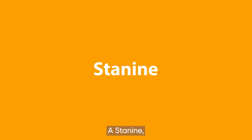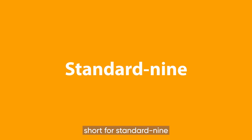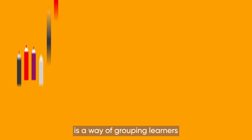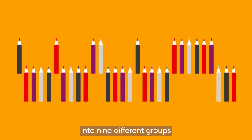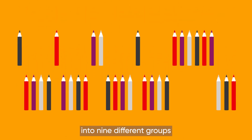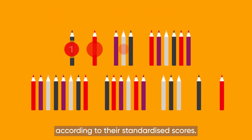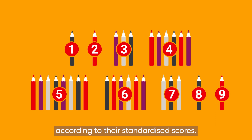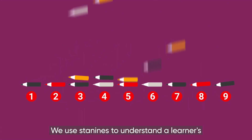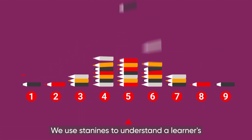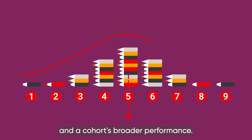A STAN9, short for Standard 9, is a way of grouping learners into nine different groups according to their standardized scores. We use STAN9s to understand a learner's and a cohort's broader performance.